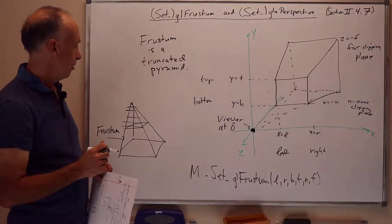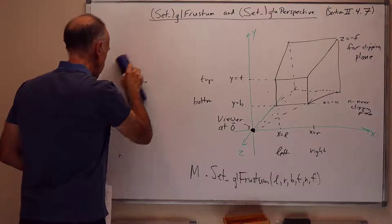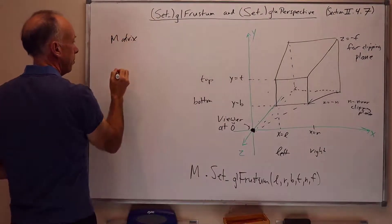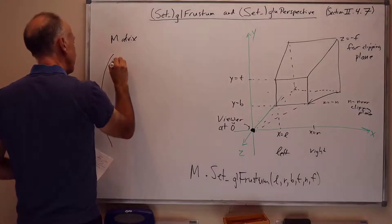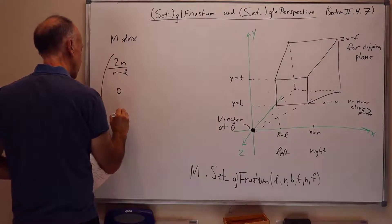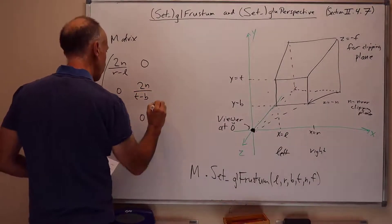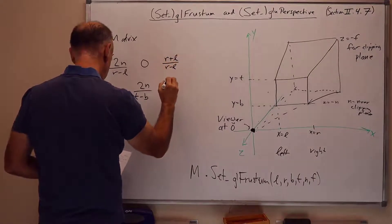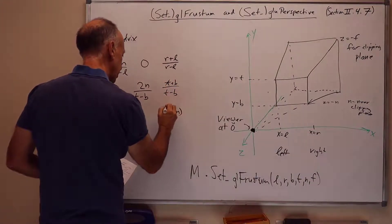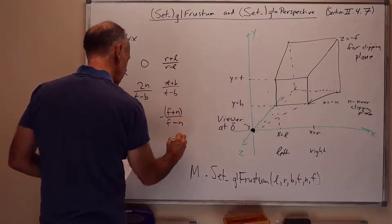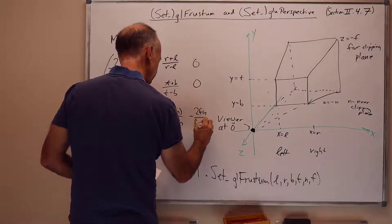The formula for this is very similar to what I had before. The matrix for this is the following. 2n over r minus l, 0, 0, 0, 0, 2n over t minus b, 0, 0, r plus l over r minus l, t plus b over t minus b, minus f plus n over f minus n, minus 1, 0, 0, 0, minus 2fn over f minus n, 0.